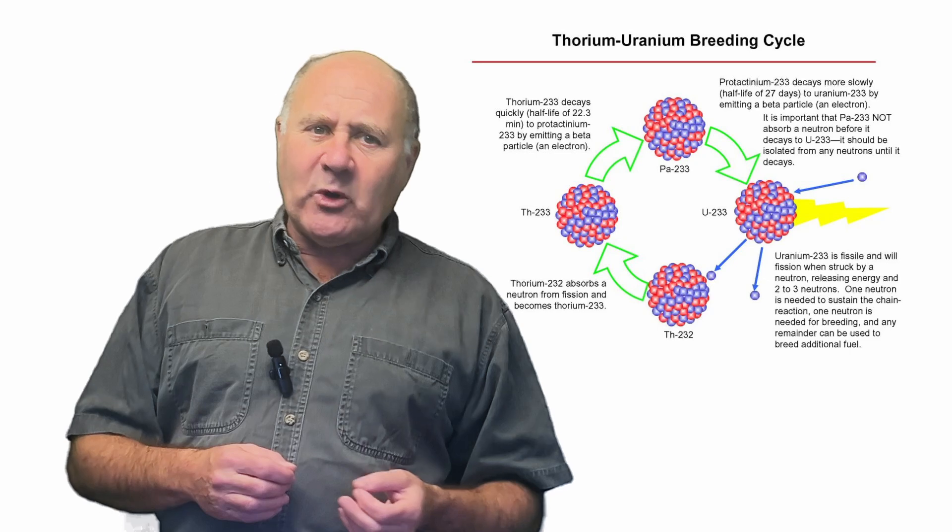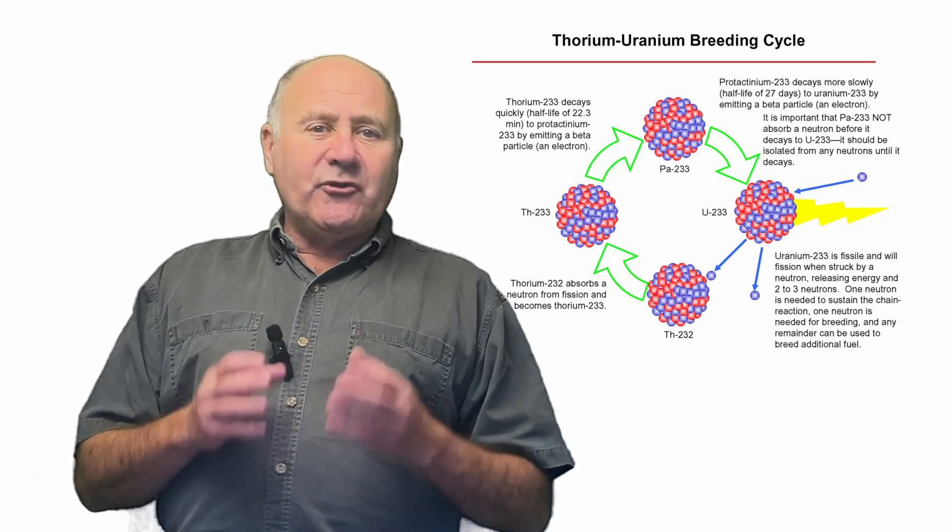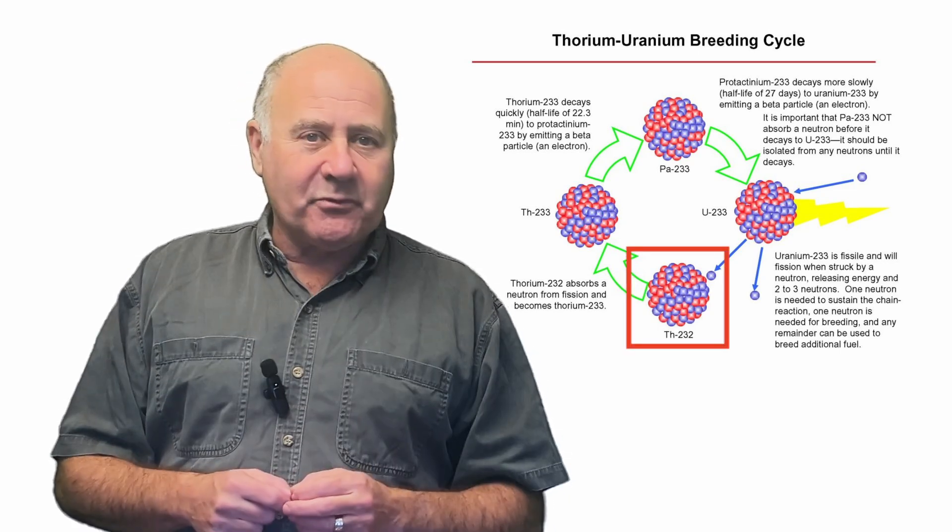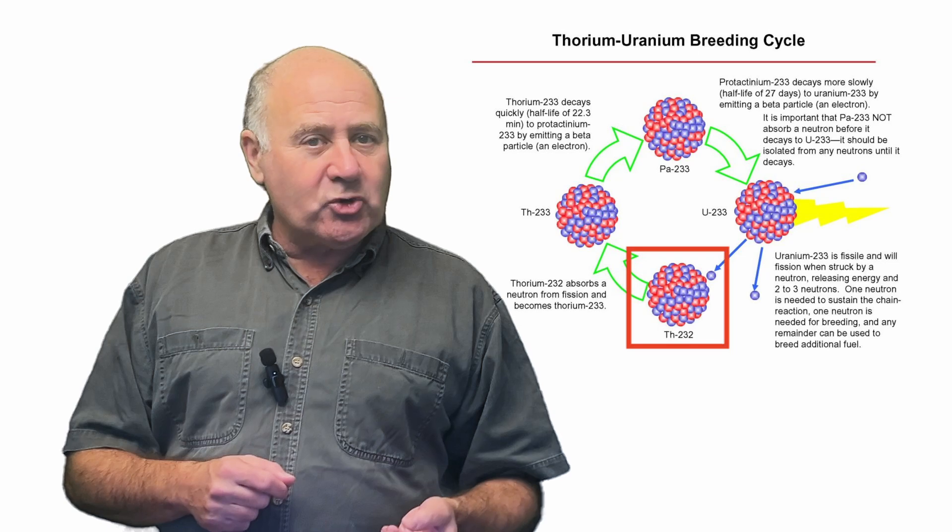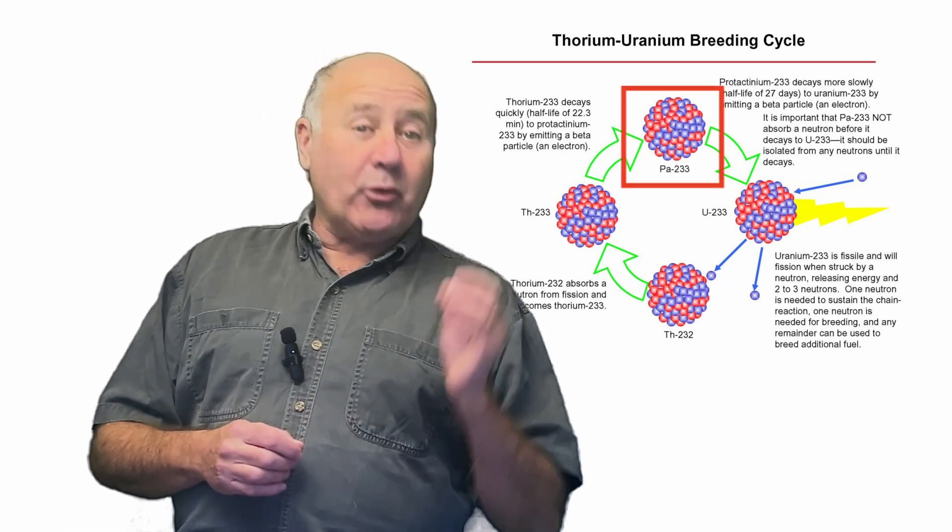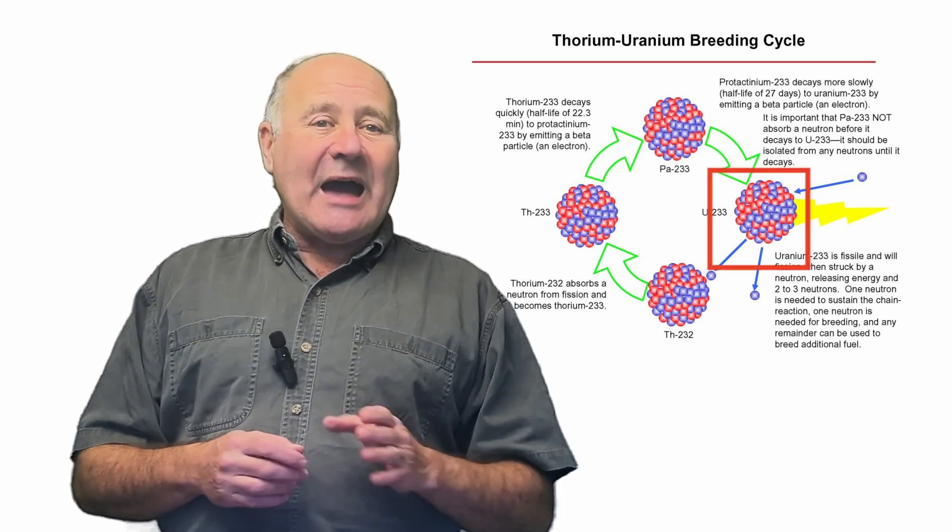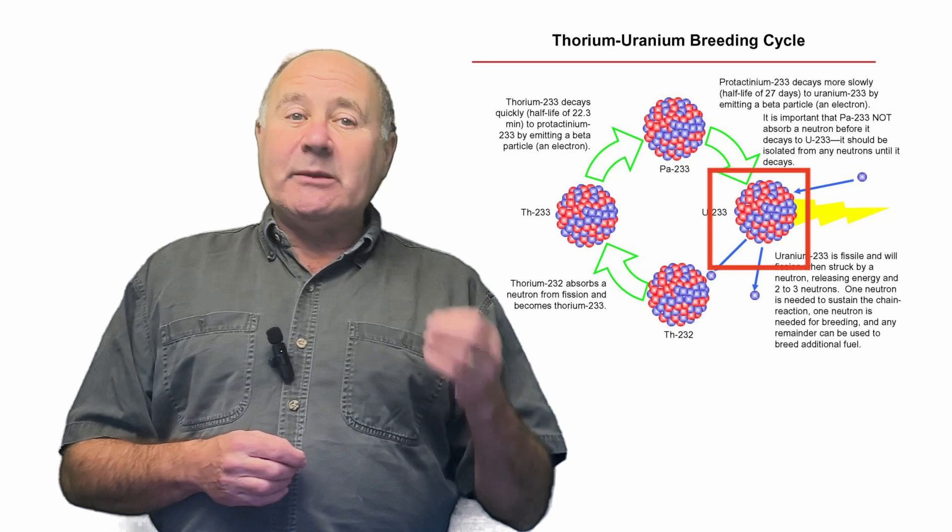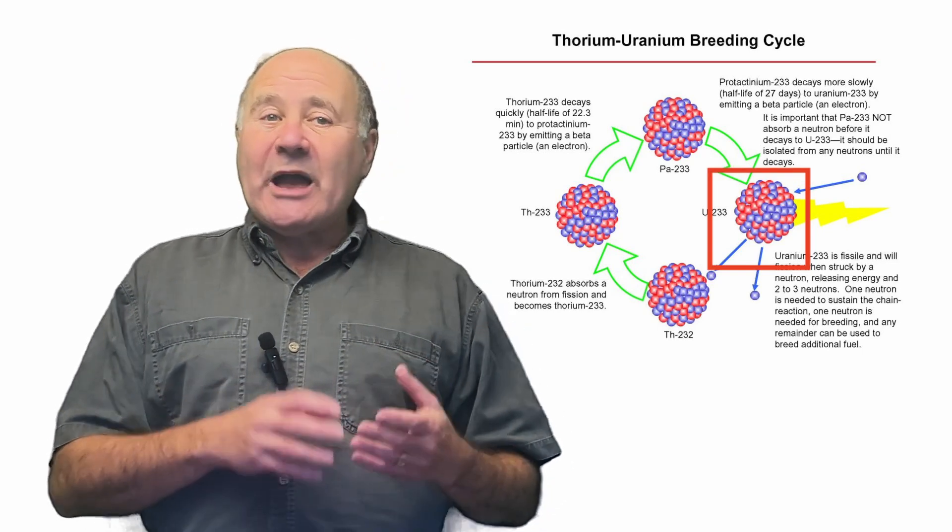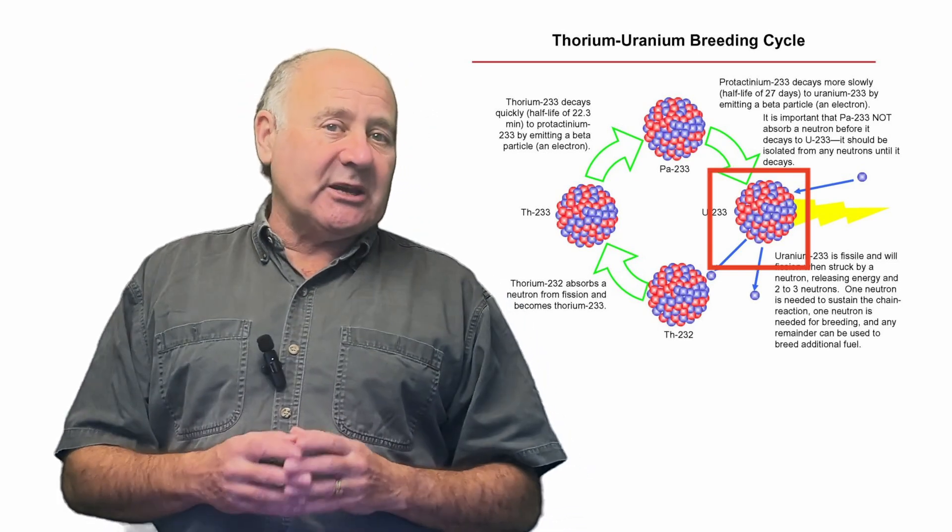For a thorium reactor, other than a small amount of uranium or plutonium to get things going, the fuel is entirely derived from fertile thorium-232. When struck with a neutron, thorium-232 transmutes into protactinium-233, which decays into uranium-233 with a half-life of 27 days. Then the uranium-233 is burnt in the reactor. So a thorium reactor is a breeder reactor creating its own fuel at the same time it generates energy.